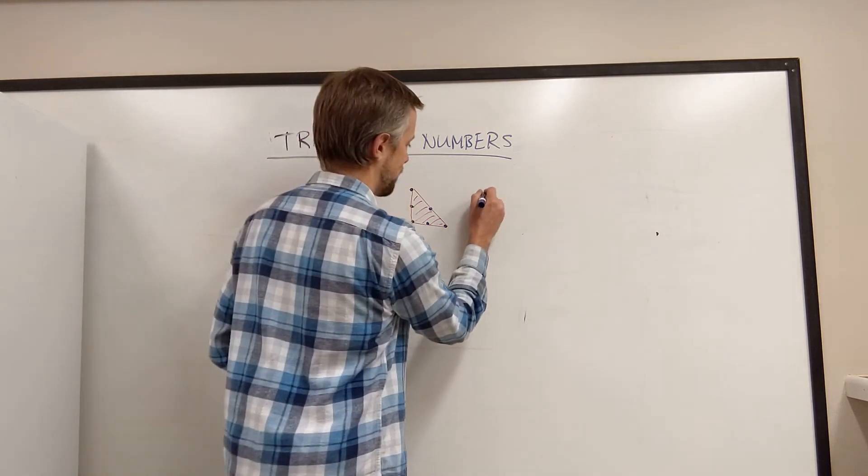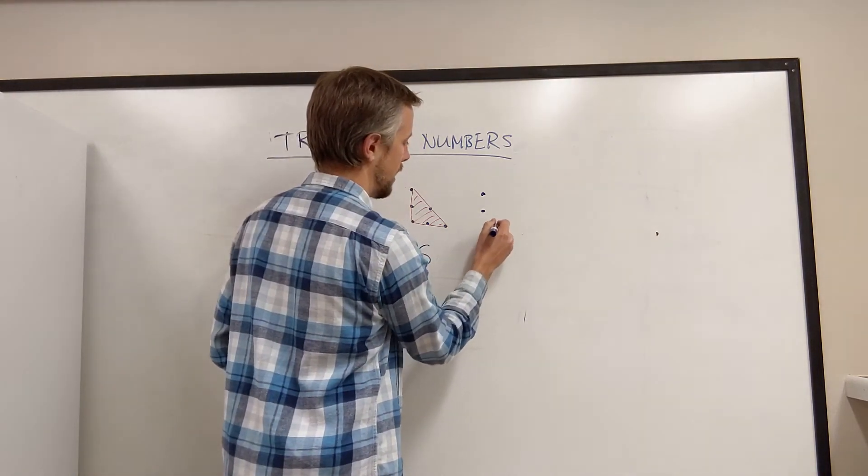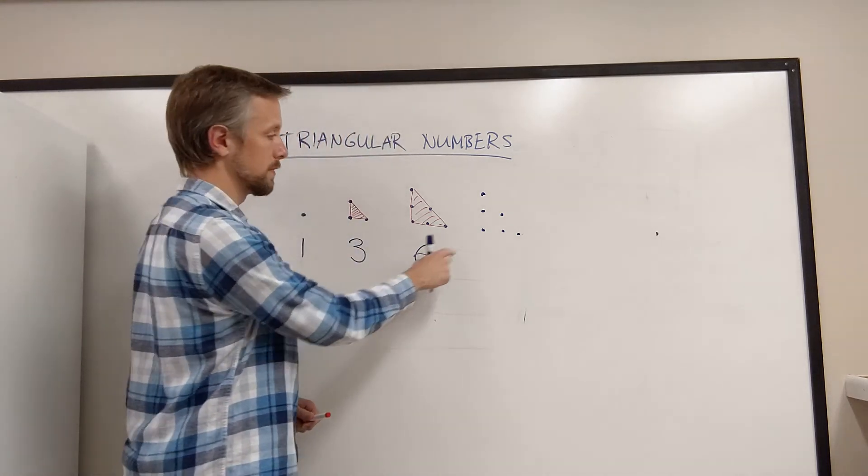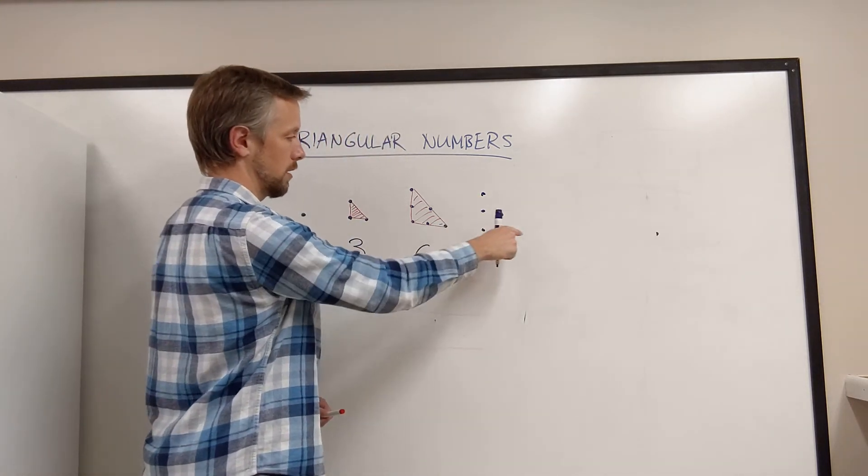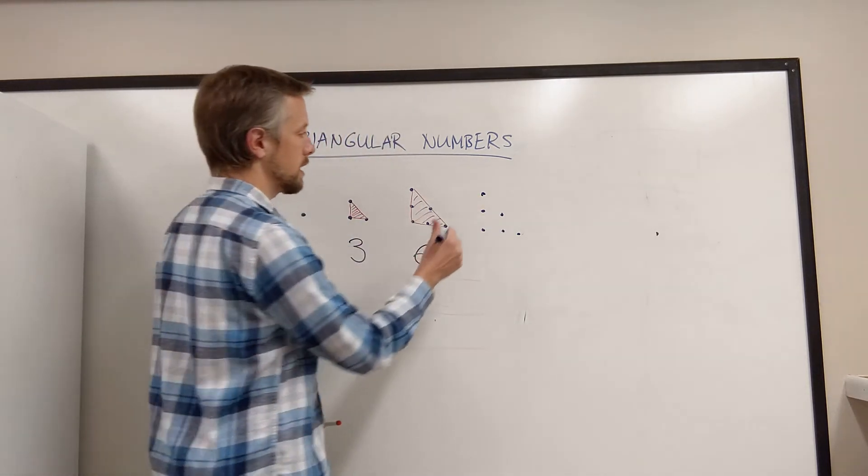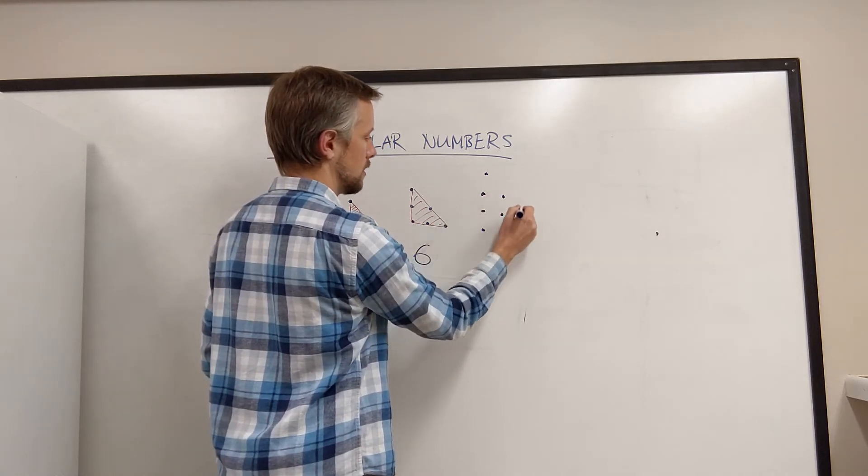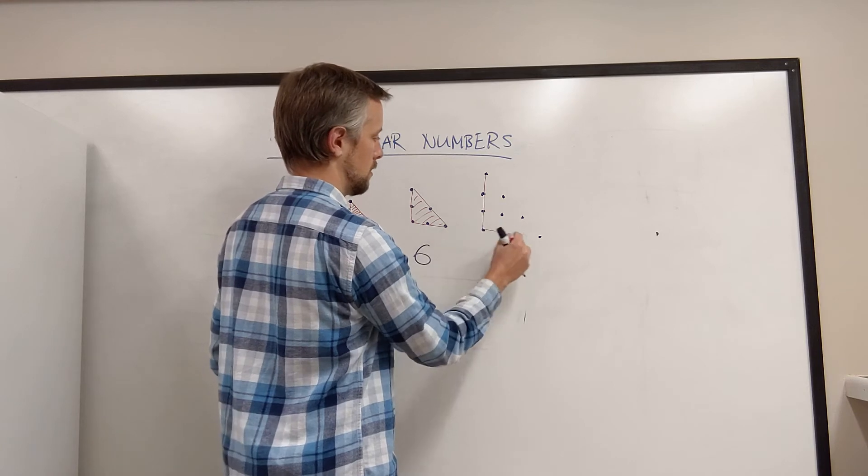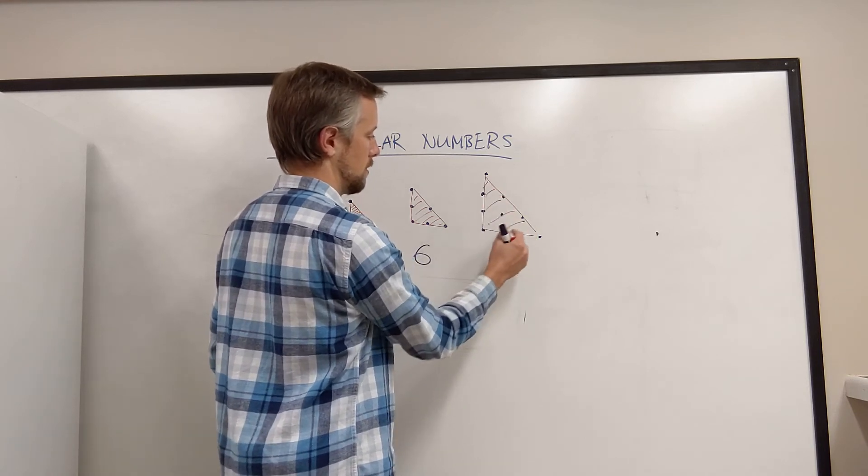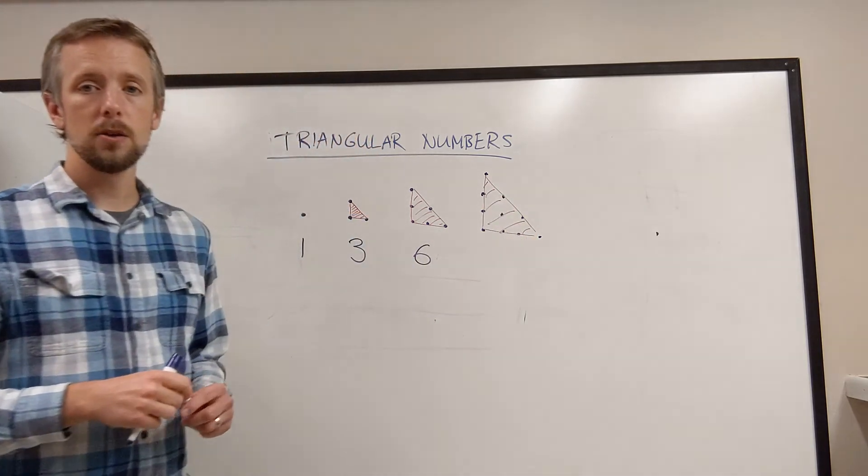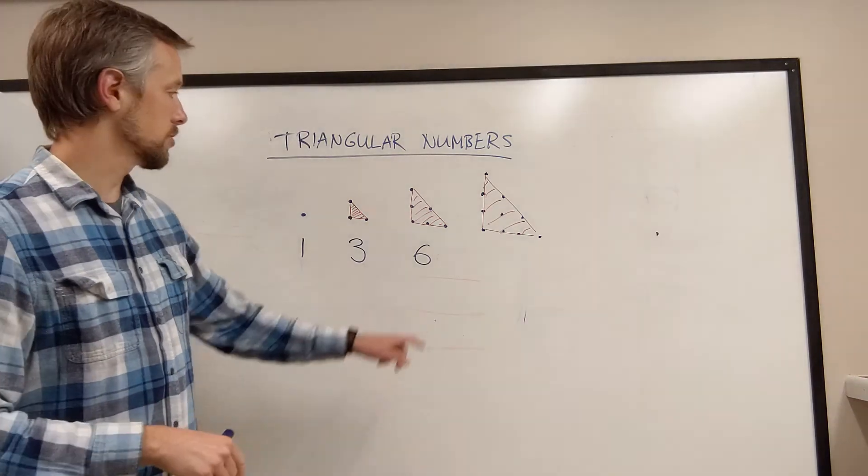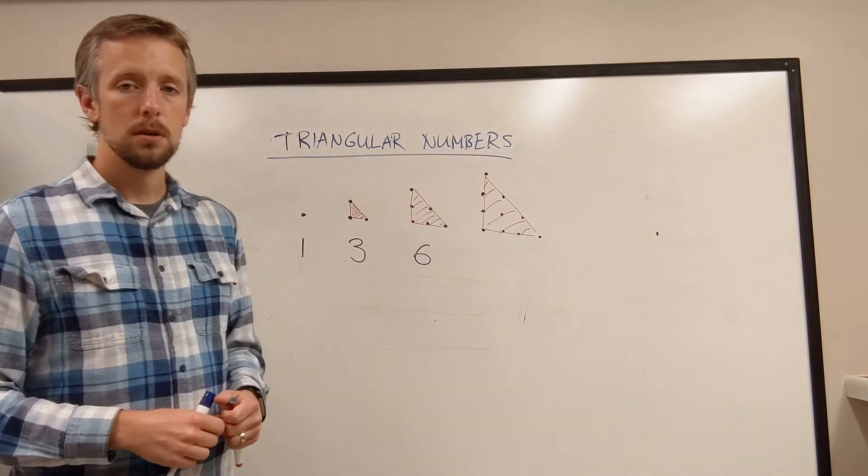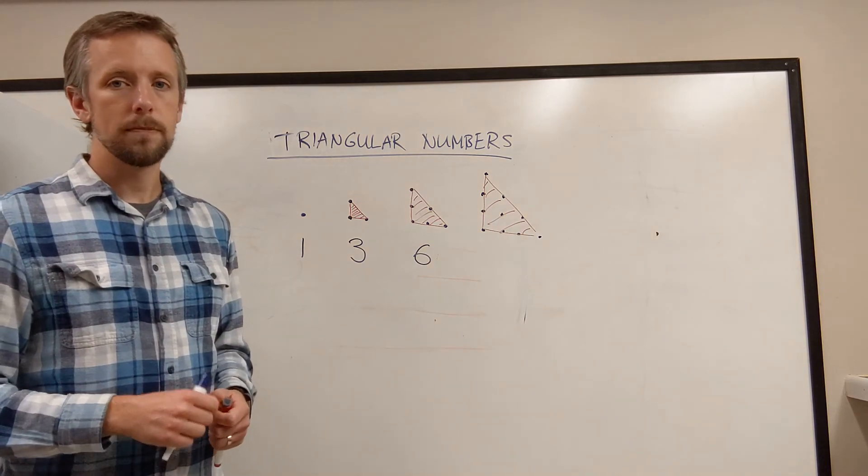We'll do one more. Again, I'm going to start with my last triangular number of 6 and that triangle, and I'm going to add another diagonal to it, just like this. Do you see the triangle? And how many dots did I use? Well, I said I started with 6 and I added 1, 2, 3, 4 more. So I should have 10 in total, and you can double check.